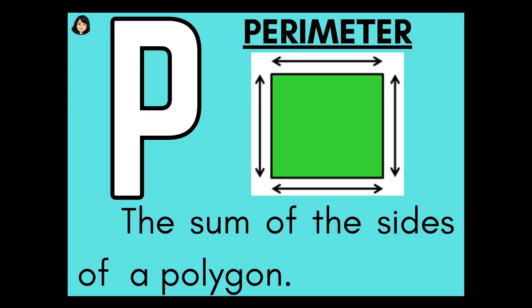Letter P, Perimeter. The sum of the sides of a polygon.